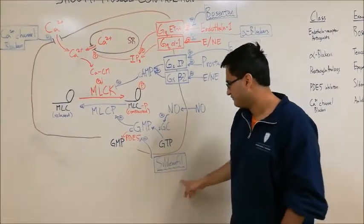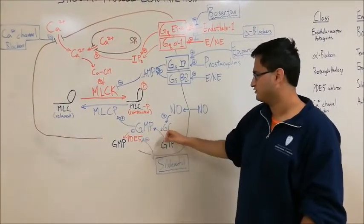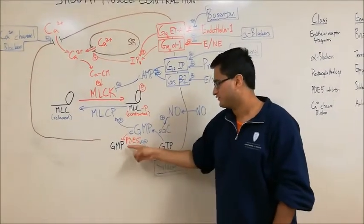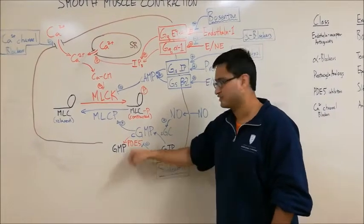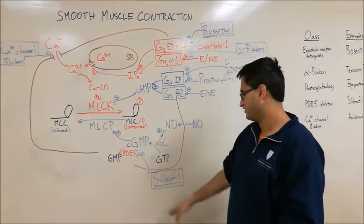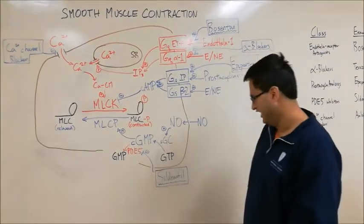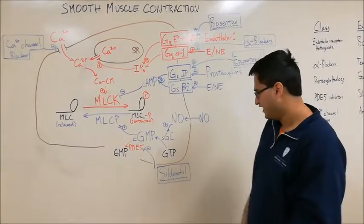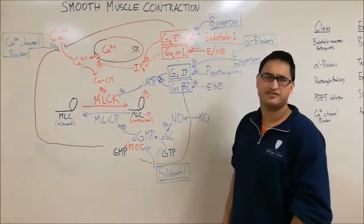Finally, we have sildenafil. Cyclic GMP is not only produced by soluble guanylyl cyclase — it's also broken down by phosphodiesterase 5, or PDE5. Sildenafil inhibits this breakdown enzyme, increasing levels of cyclic GMP. Therefore, sildenafil increases cyclic GMP, promotes MLCP activation, and promotes vasodilation, helping decrease blood pressure. Sildenafil is used in the treatment of pulmonary hypertension and can also be used in the context of erectile dysfunction.